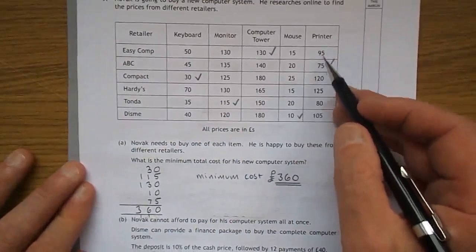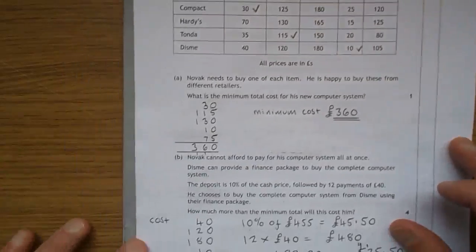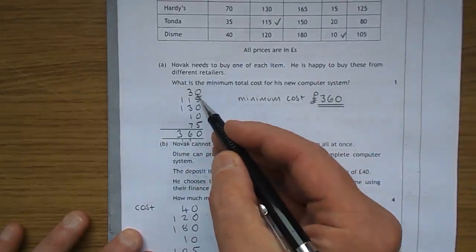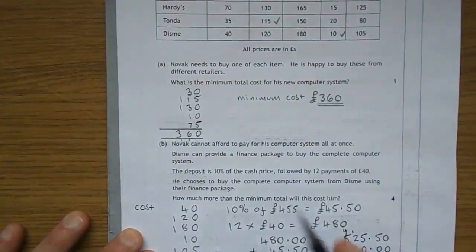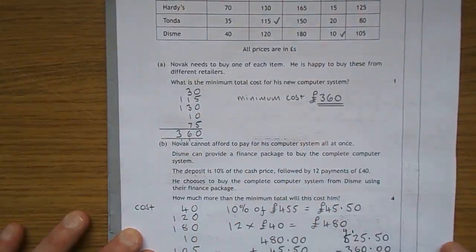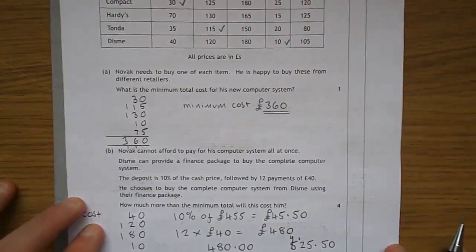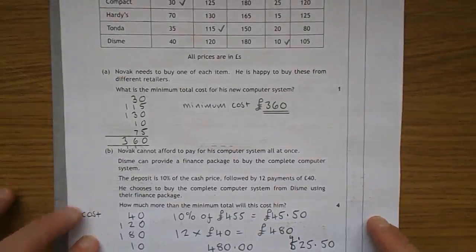So obviously you go and you look at each of the items and you home in, and you can see that I've just ticked on the cheapest one there. Add them all up, you get £360. So the minimum cost is £360 by buying the cheapest of each of the different things he needs.